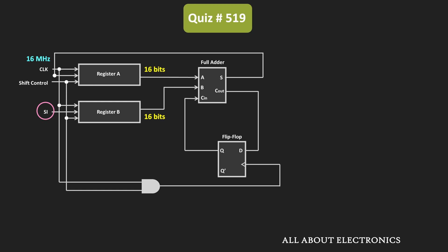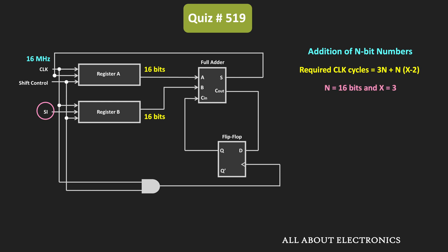From the recent video on the serial adder, the required number of clock cycles for adding x numbers of n bits is 3n plus n times (x minus 2). Here n equals 16 and x equals 3, so the required number of clock cycles equals 48 plus 16, which is 64 clock cycles. The clock frequency is 16 MHz, so the required duration equals 64 clock cycles multiplied by 1 divided by 16 MHz.